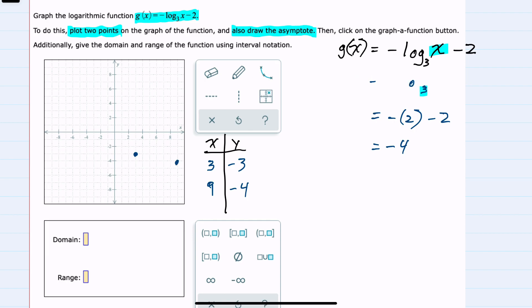One more easy to calculate value would be 1, because 3 raised to the zero power is 1. So the log base 3 of 1 is 0, giving us negative 0 minus 2, or just minus 2.